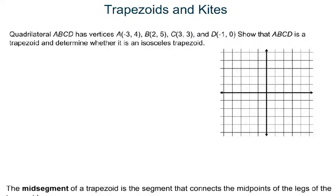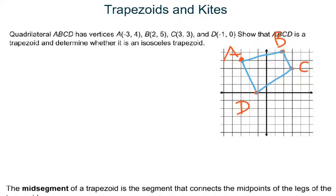Quadrilateral ABCD has vertices at given coordinates. Show that ABCD is a trapezoid and determine whether it is isosceles. First, plot the points: A is at (−3, 4), B is at (2, 5), C is at (3, 3), and D is at (−1, 0). Connect them. The question is whether it's a trapezoid — you need exactly one pair of parallel sides. Looking at AB and DC, they are clearly not parallel.